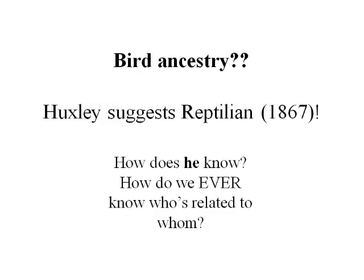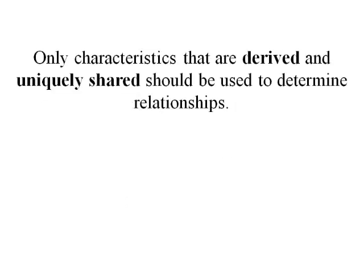One way we work out relationships among living organisms is to use cladistics. This is a method that uses strict rules for judging relationships. The main rule is that only characteristics that are derived and uniquely shared should be used to determine relationships. In phylogenetics, a derived trait is a trait present in an organism but absent in the last common ancestor — so if you evolve some novel feature that your ancestors didn't have, that's a derived trait.